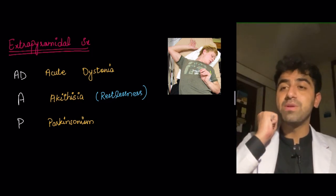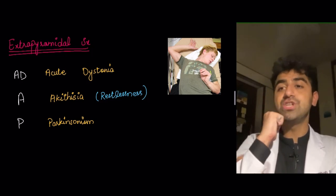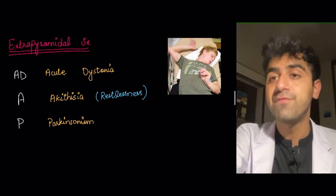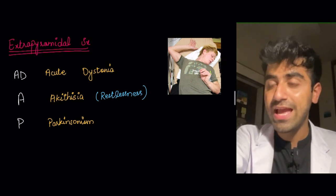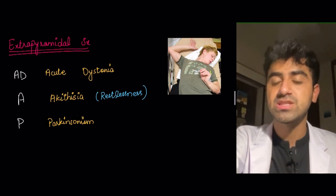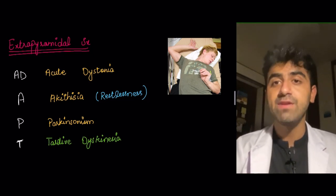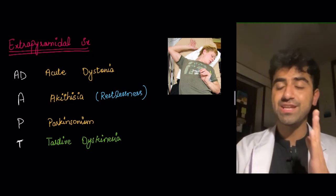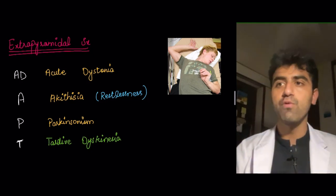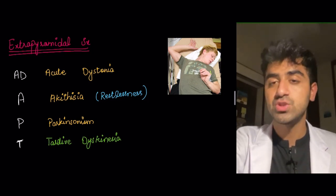Then we have parkinsonian symptoms: trouble initiating movement, lead-pipe rigidity, and bradykinesia or reduced movement. This rigidity and these parkinsonian symptoms are characteristic adverse effects of high potency first generation antipsychotics and less commonly of low potency first generation antipsychotics. Then tardive dyskinesia involves repetitive involuntary movements. The key difference: akathisia is the feeling of restlessness — the person wants to move. Tardive dyskinesia is something moving by itself — the person has no control over it.